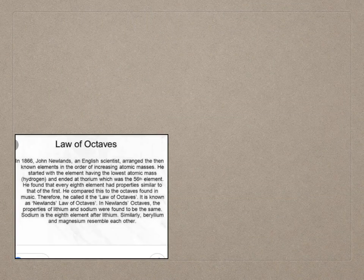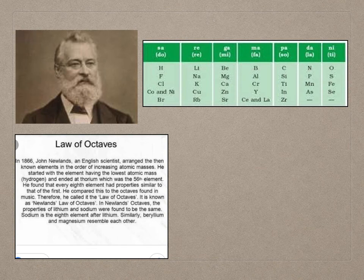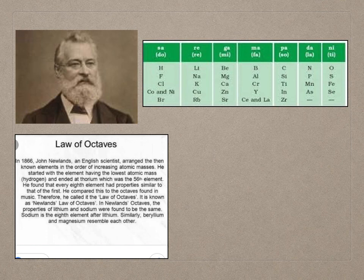Next we shall see the Law of Octaves — that is, Newlands' Law of Octaves. The English scientist John Newlands correlated the atomic masses of elements to their properties in a different way. In the year 1866, Newlands arranged the elements known at that time in increasing order of atomic masses, starting with the lightest element hydrogen and ending with thorium. He found that every eighth element had properties similar to those of the first.